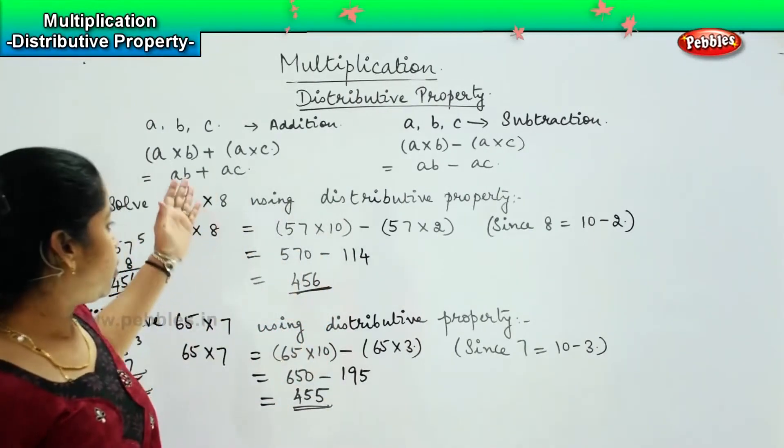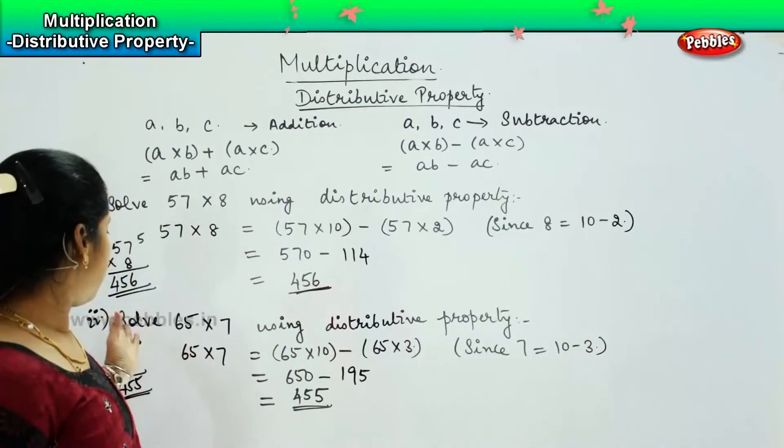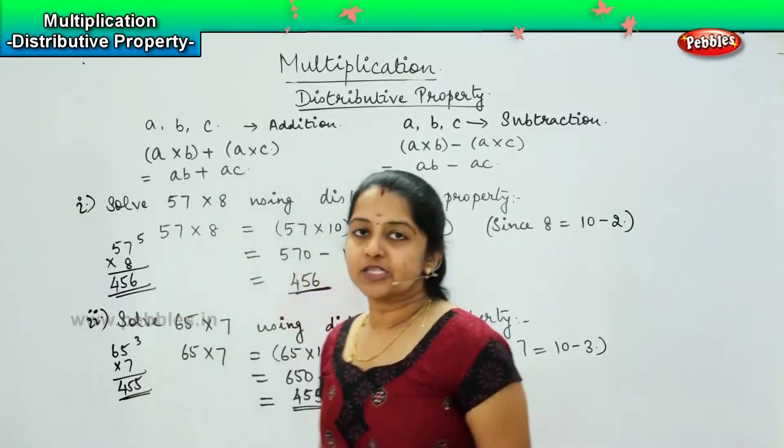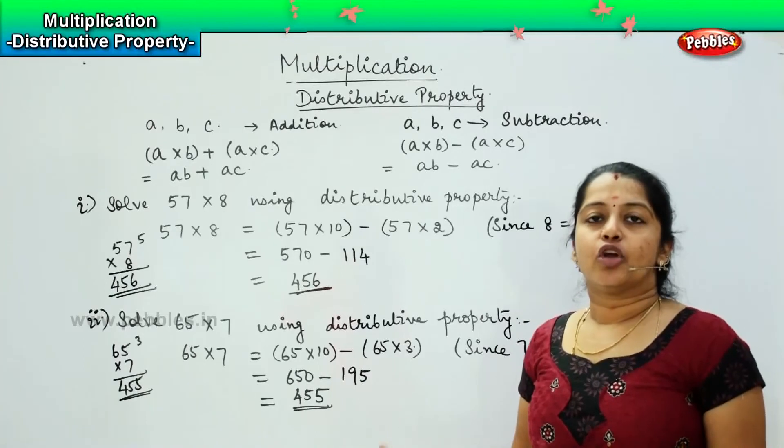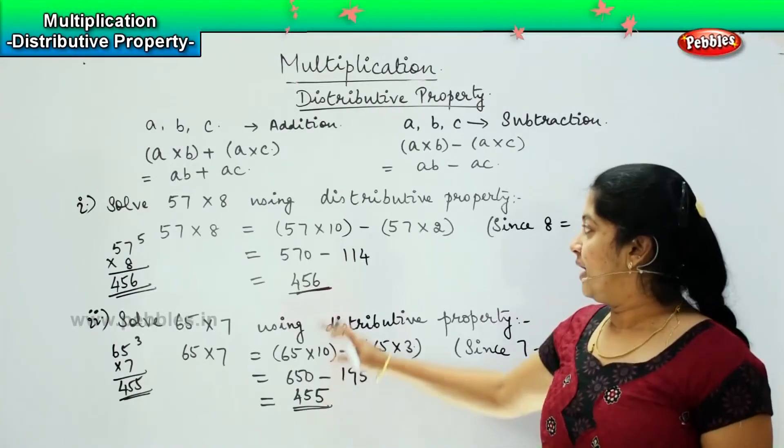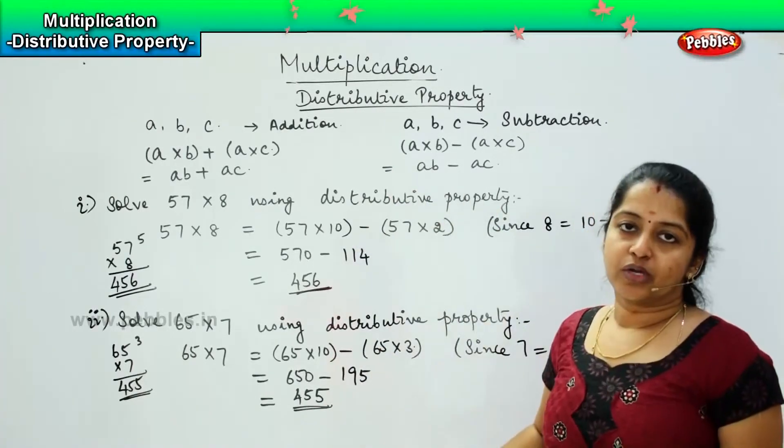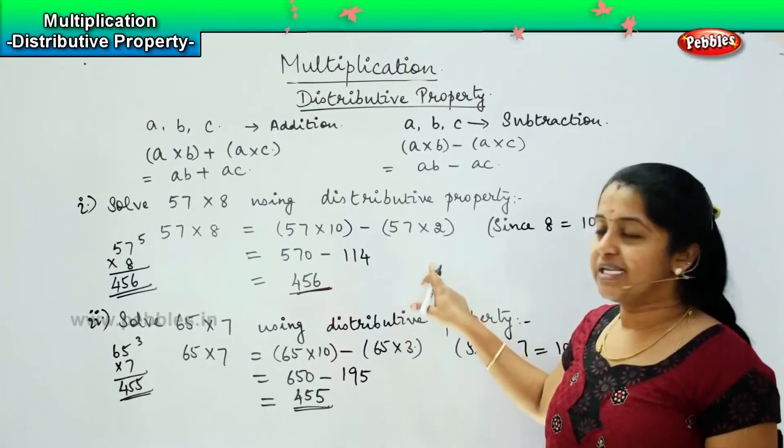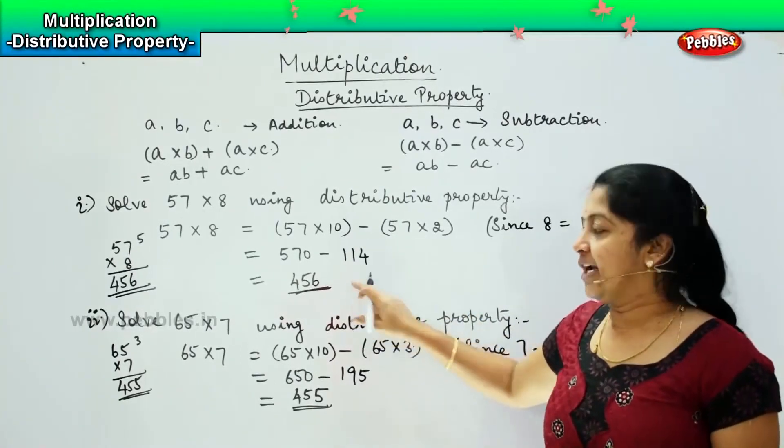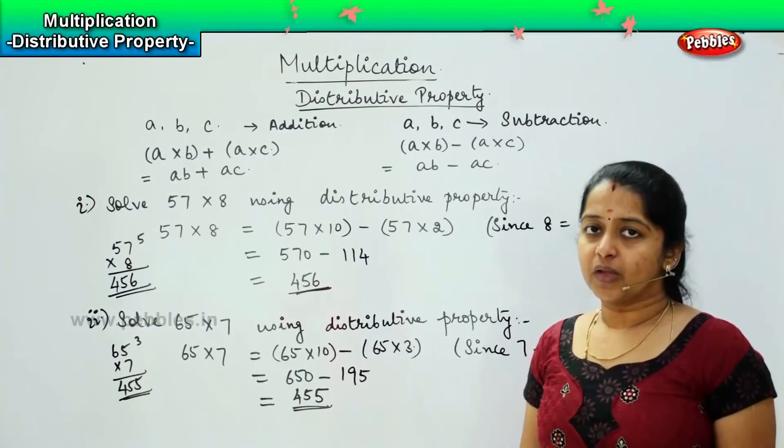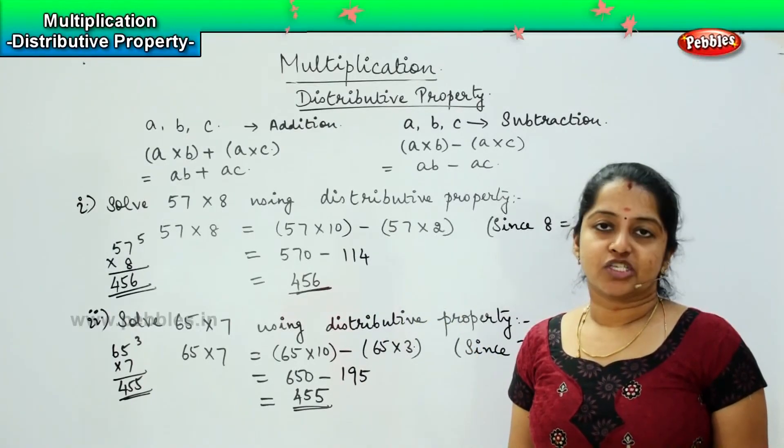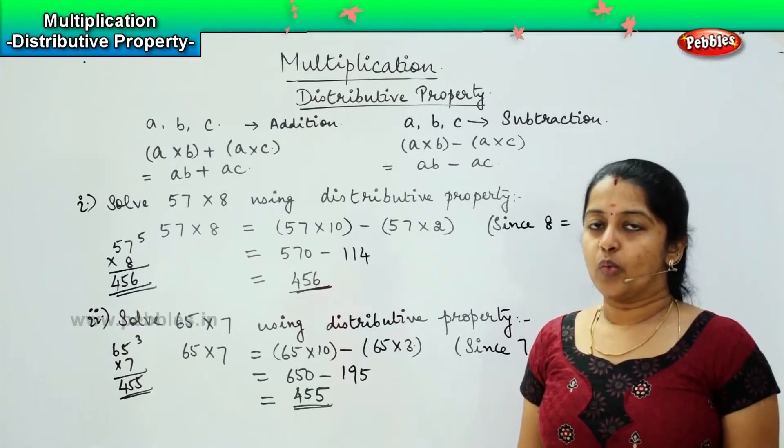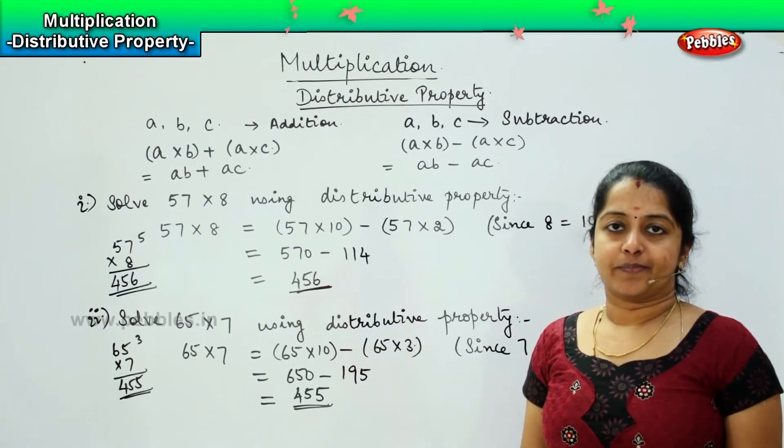So, you may ask me why should we solve this way when I can multiply directly? The reason is because whenever you find a large sum like this, you may tend not to remember the multiplication, but if you break it using the distributive property, it becomes easier for you to solve and get your desired result. So, this is how we will be solving the sums using the distributive property. Now we will be going to the next step.